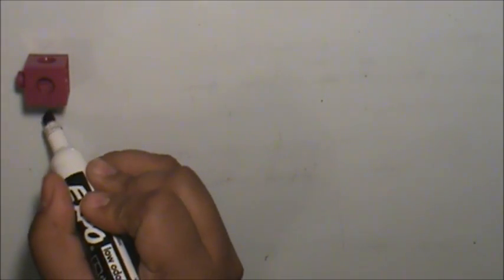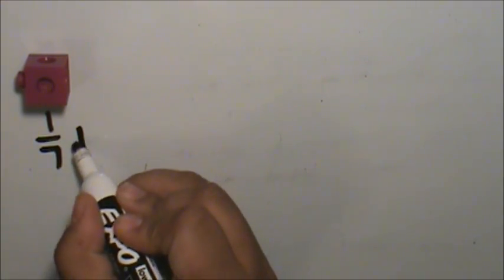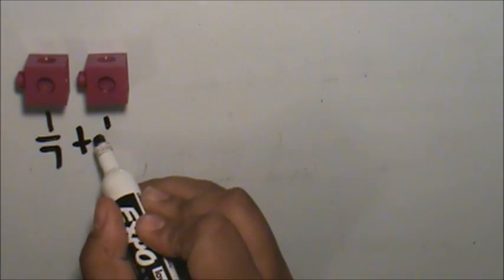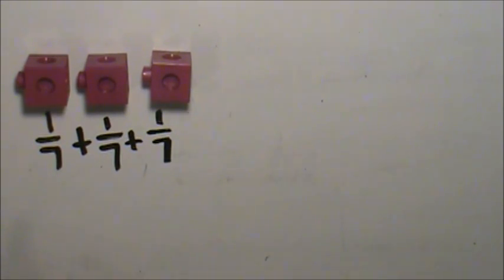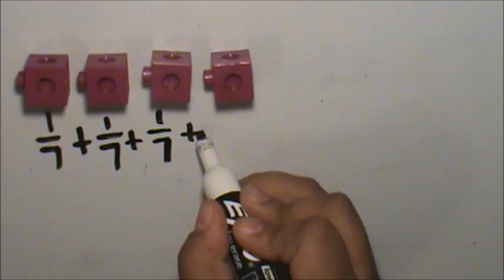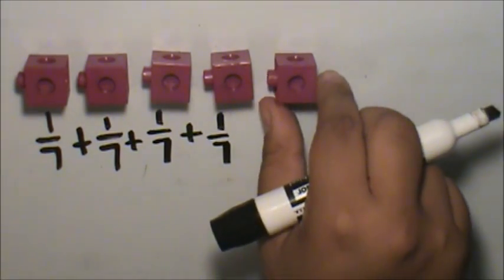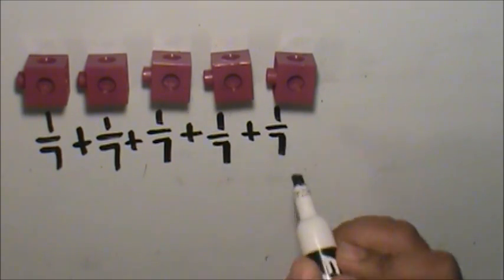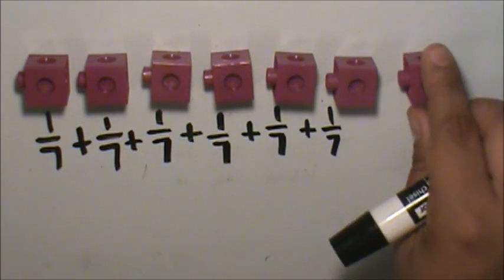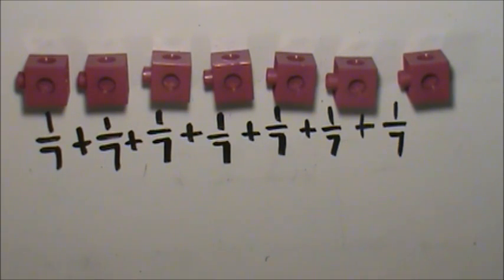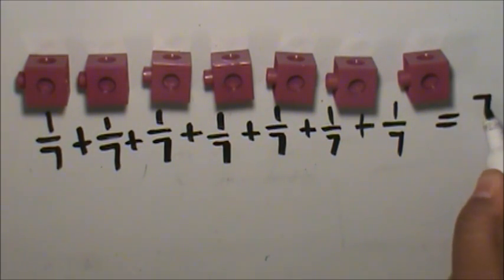First, I will use connecting cubes to represent one whole using sevenths and name the unit fraction. 1/7, 1/7, 1/7, 1/7, 1/7, 1/7, 1/7 — and that equals 7/7.